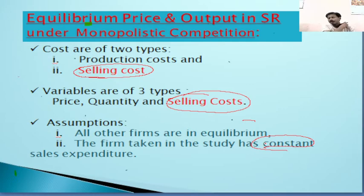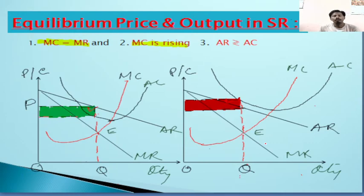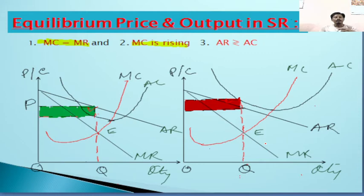By assuming constant sales expenditure, we can determine the equilibrium level of price and output in the short run. To do so, we must fulfill two equilibrium conditions: the necessary condition is that MC must equal MR, and at that equality, MC must be rising or non-decreasing. Following this, we can determine equilibrium in both the short run and long run.